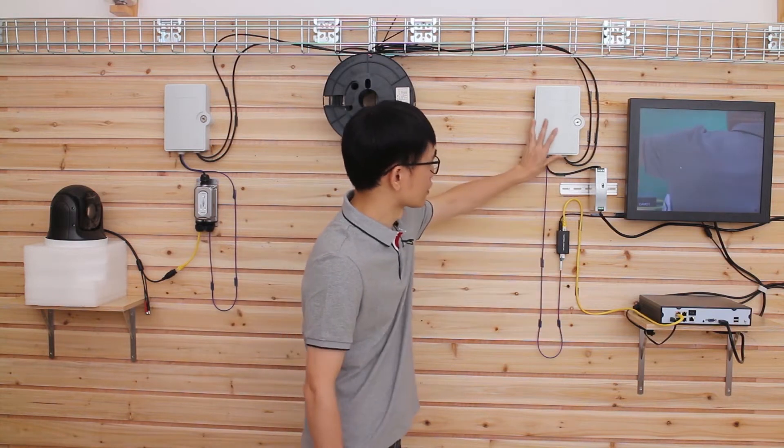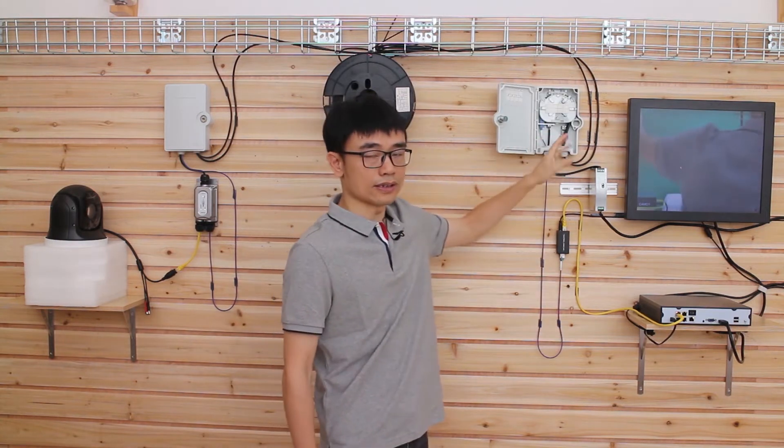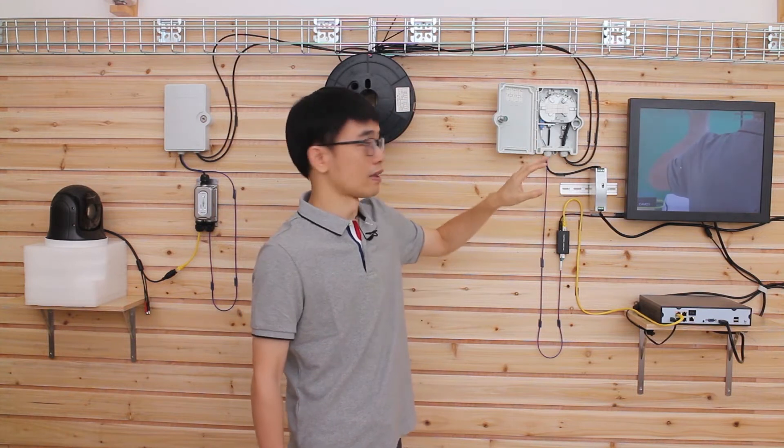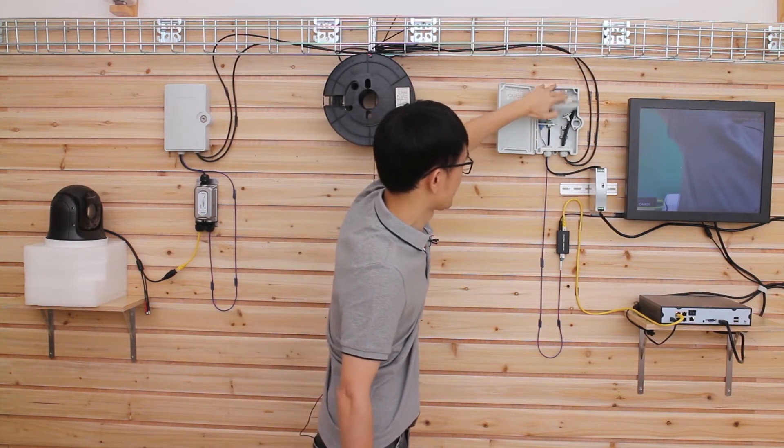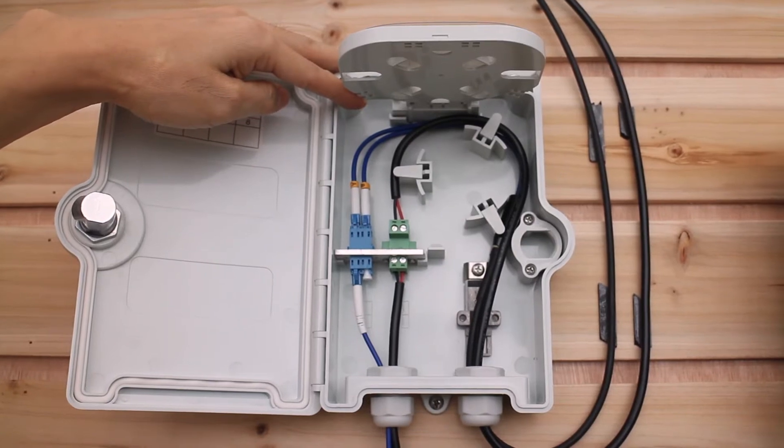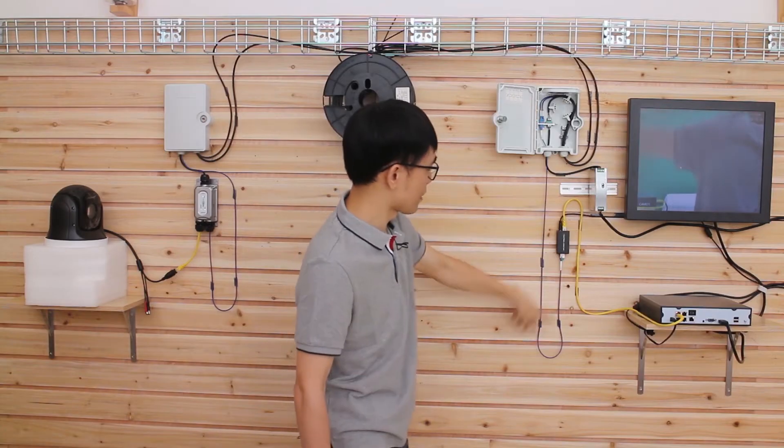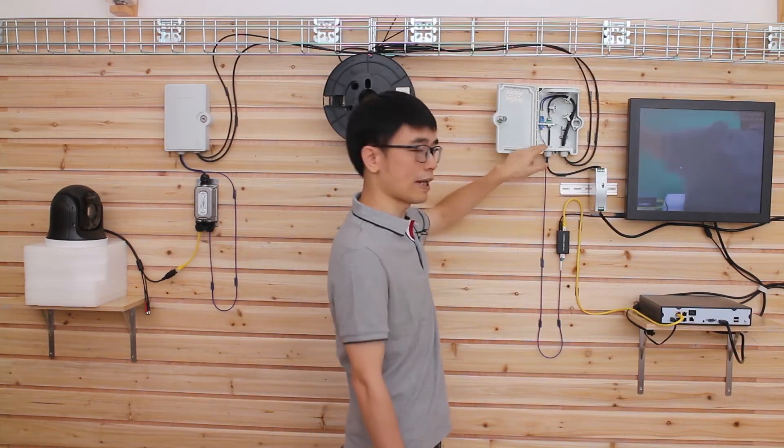From here, we have a box. There's nothing special—it's just for cable management. Let's open it up and see what's inside. We have two fiber optic cables and a short patch cord. Nothing special, just for cable management.